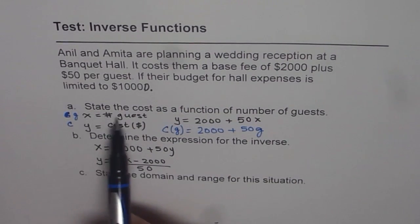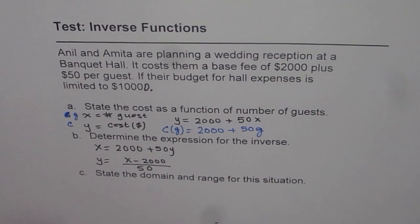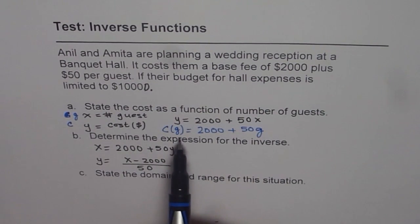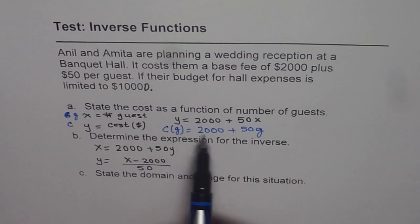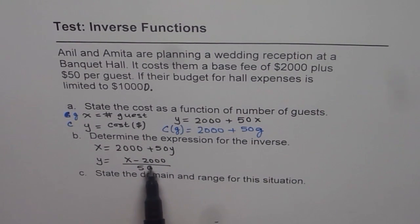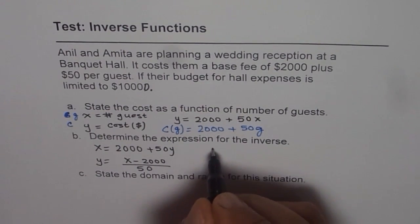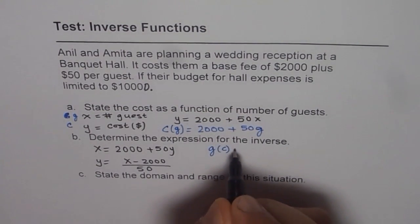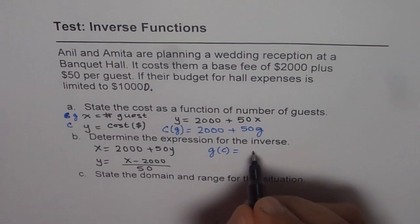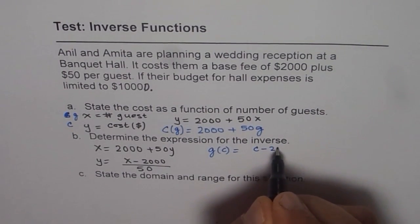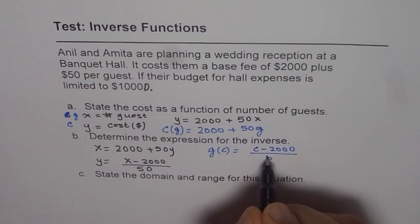In function notation, you can say cost with guest as independent variable is 2000 plus 50g. When you find the inverse, it becomes guest as a function of cost. So guest as a function of cost equals cost minus 2000 over 50.